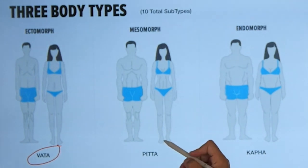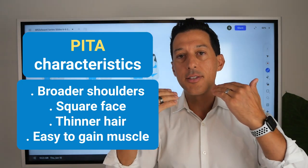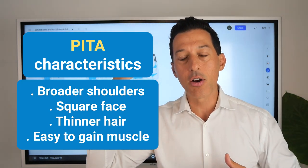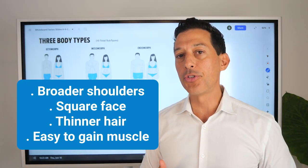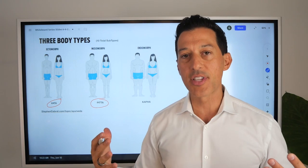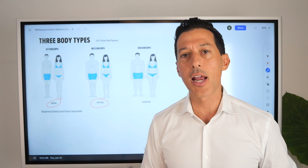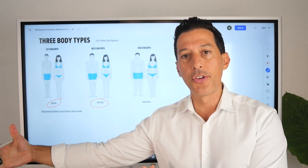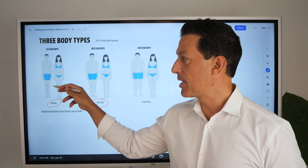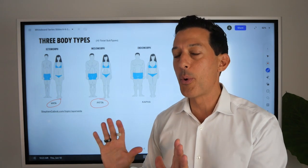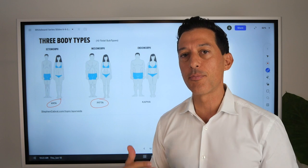The mesomorph, or the pitta body type in Ayurveda, has broader shoulders and more of a square face. They have thinner hair — men, as they get older, typically go bald faster. They're able to put on muscle more easily, with more defined calf muscles, forearms, chest muscles, and so on. The same applies for females — able to put on a little bit more muscle. The vata might trend more towards being nervous or anxious, while pitta may trend a little bit more towards aggression or anger.